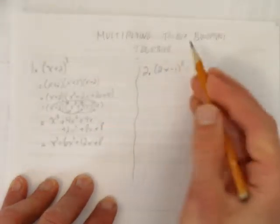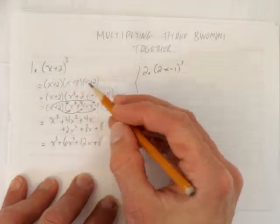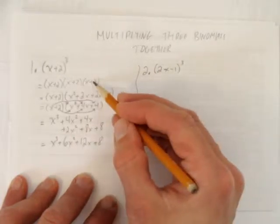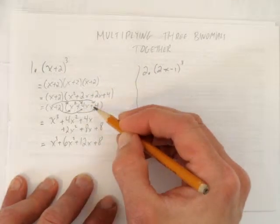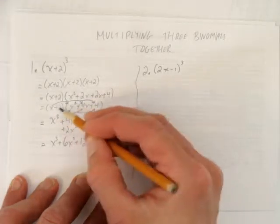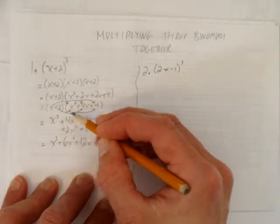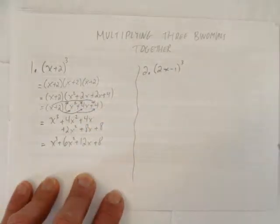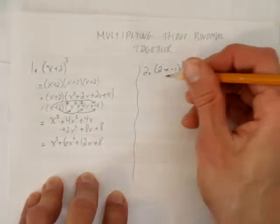So, we multiply three binomials together by first multiplying the second two, simplifying, and then multiplying the first term of the first binomial by each thing, and then the second term of the first binomial by each thing. So, try that with this question.